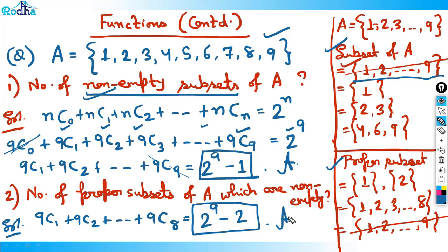This is the meaning of subset and proper subset — I hope you got it. It's a good concept to know. For functions, you need a basic idea of permutation and combination. Just watch my first five or six videos of P&C and then come back to functions, because we use P&C concepts throughout — for counting functions, onto functions, subsets, and proper subsets. Now let's move to the third question.